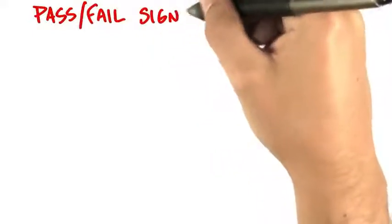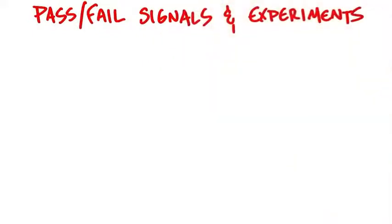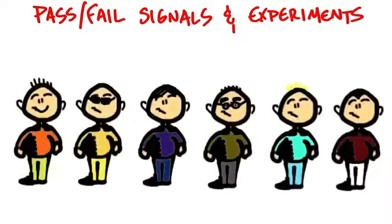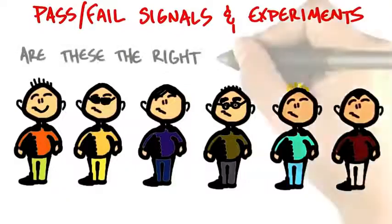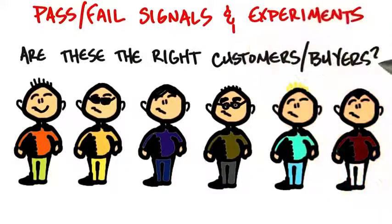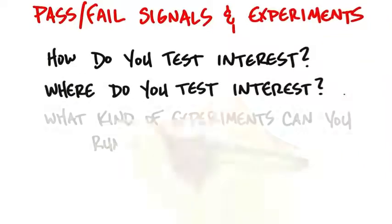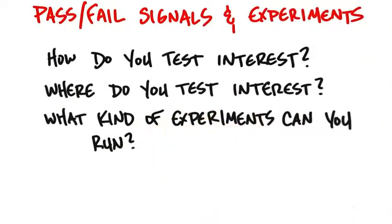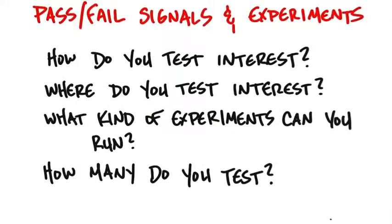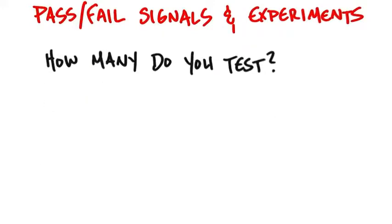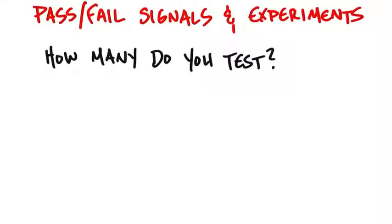Remember, we've been talking about pass-fail signals and experiments. So as you get out of the building and start talking to these potential customers, you need to set up some experiments. How do I know these are the right customers or the right buyers? You want to set up a series of experiments to test interest and figure out where to test it, what kind of experiments you can run, and how many to test. The how many is a classic question, and the answer is it depends.